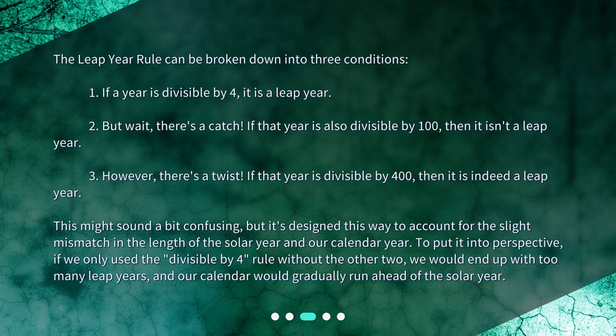This might sound a bit confusing, but it's designed this way to account for the slight mismatch in the length of the solar year and our calendar year. To put it into perspective, if we only used the divisible-by-4 rule without the other two, we would end up with too many leap years, and our calendar would gradually run ahead of the solar year.